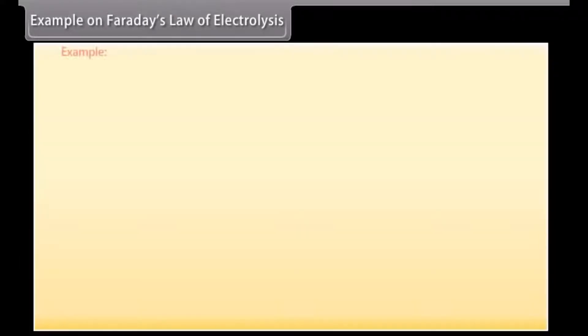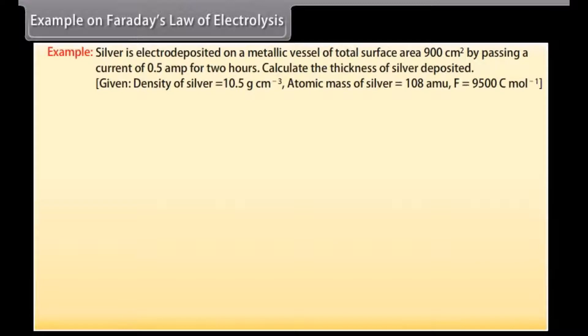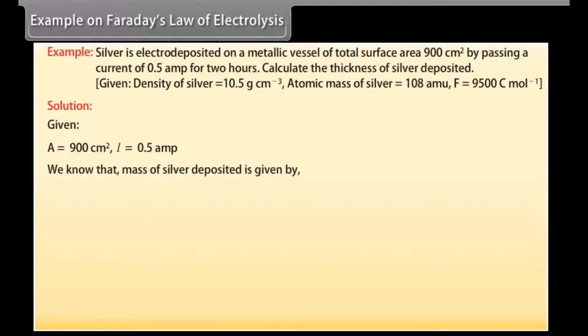Example on Faraday's law of electrolysis. Let's take an example on Faraday's law of electrolysis. Silver is electro-deposited on a metallic vessel of total surface area 900 cm² by passing a current of 0.5 Ampere for 2 hours. Calculate the thickness of silver deposited. Let's see the solution. Here given values are A is equal to 900 cm², I is equal to 0.5 Ampere.